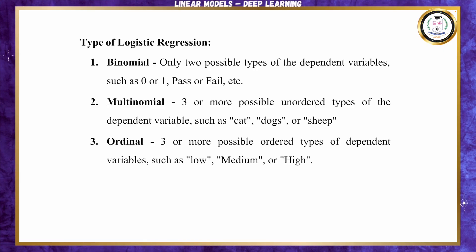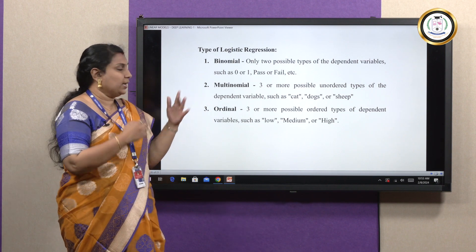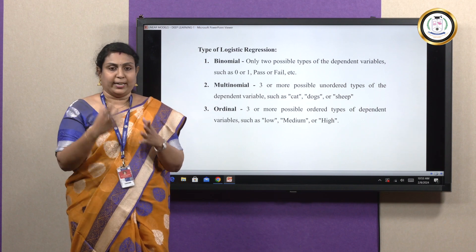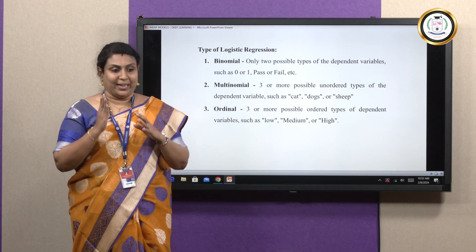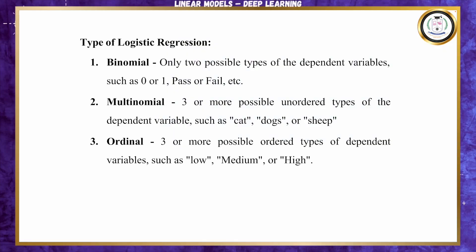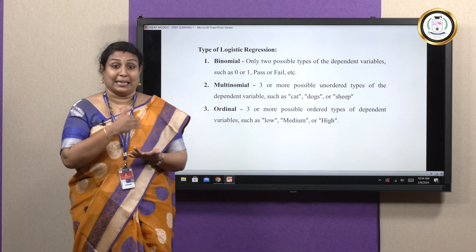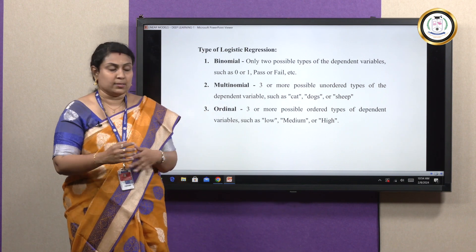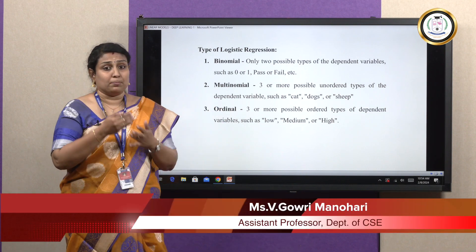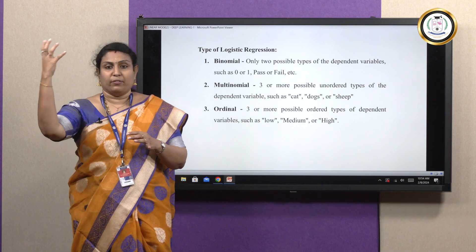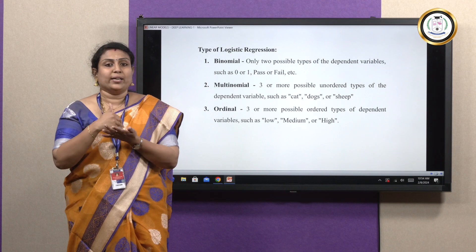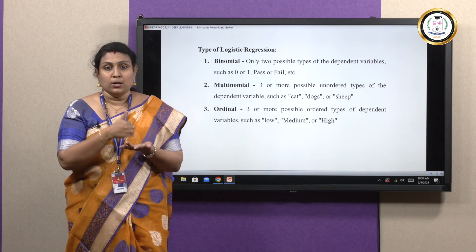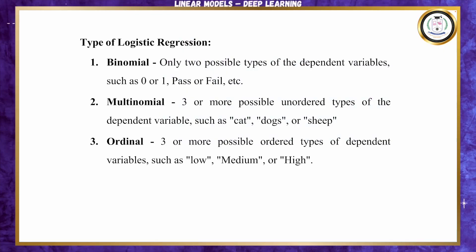The types of logistic regression are: binomial, multinomial, and ordinal. Binomial has only two possible outputs — either 0 or 1, pass or fail, true or false. Multinomial involves unordered types of dependent variables, such as classifying animals — cat, dog, sheep, or fox. Ordinal involves ordered types of dependent variables, for example the speed of a fan which has three levels: low, medium, or high.